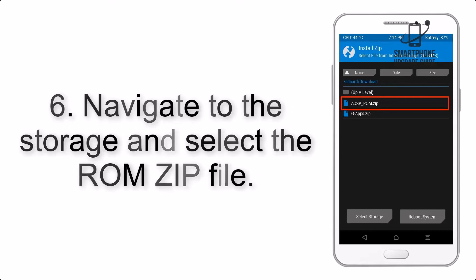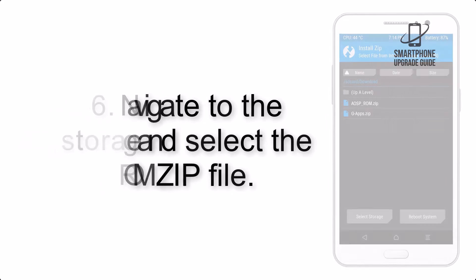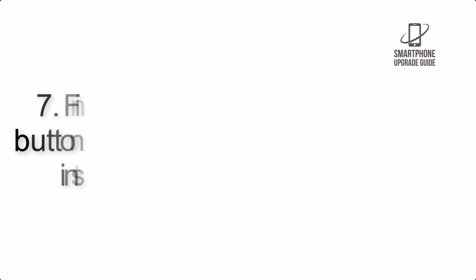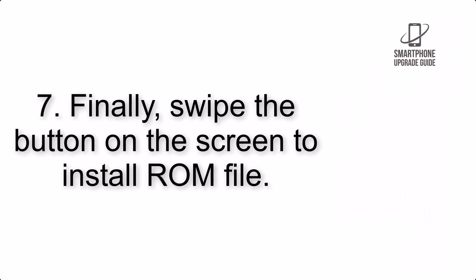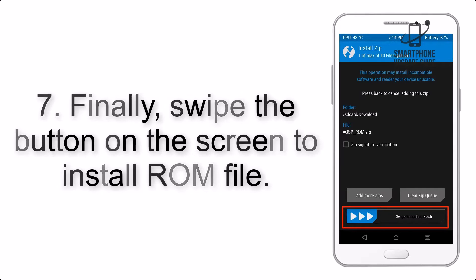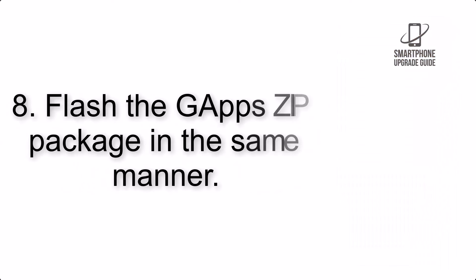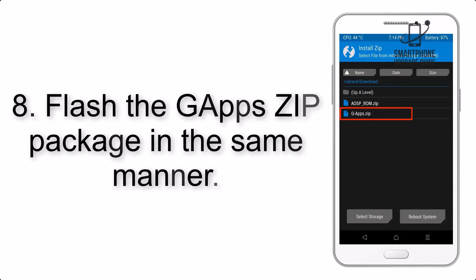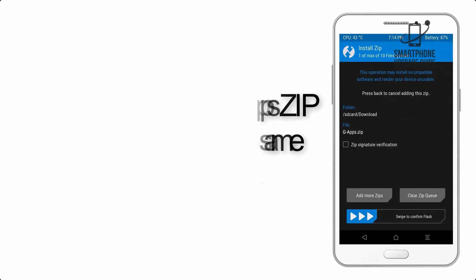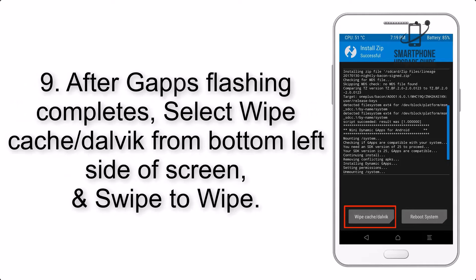Step 5: Go back to the recovery main screen and tap on the Install button. Step 6: Navigate to the storage and select the ROM zip file. Step 7: Finally, swipe the button on the screen to install the ROM file.